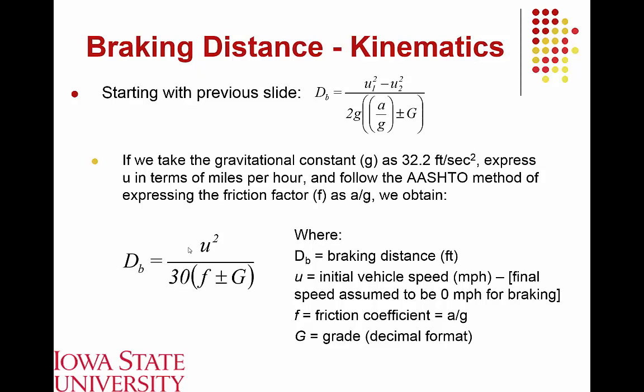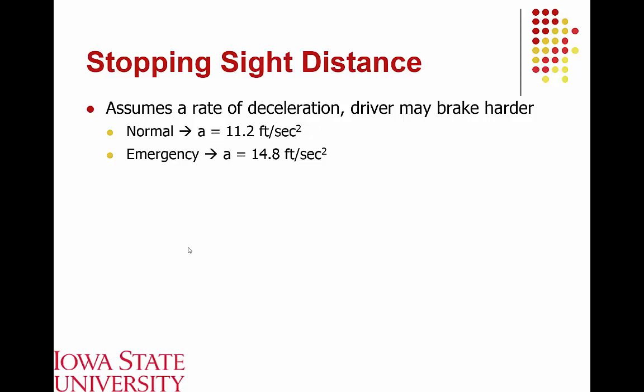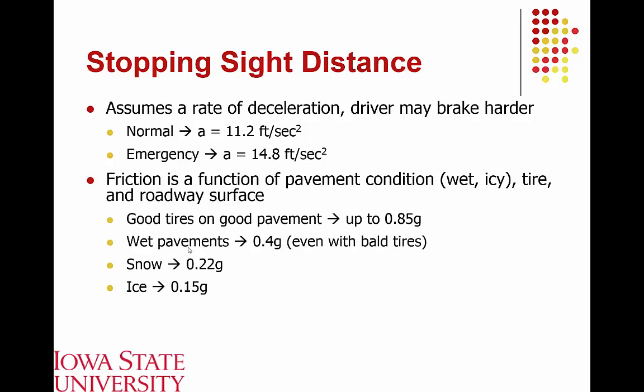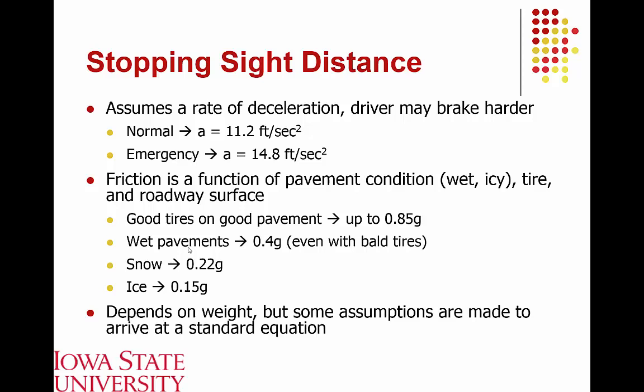The typical design assumption for deceleration rate under normal circumstances is 11.2 ft/s², a very comfortable rate. Research shows that in emergency situations, the majority of drivers can stop at rates greater than 14.8 ft/s², upwards of 20 or more ft/s², making these relatively conservative design assumptions. For the friction factor, deceleration rates vary by pavement condition: good tires on good pavement can achieve up to 0.85 g's; wet pavement with bald tires up to 0.4 g's; and snowy or icy conditions only 0.22 or 0.15 g's.